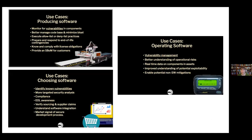These are some of the use cases: when you're producing the software, vulnerability monitoring is key for your dependencies and working on your code base, and only including what you really need. When you're operating software, again vulnerability management, but also real-time data on what's happening. When you're choosing software and bringing things in to create products, all of these are cases where we can use having a software bill of materials accessible, readable, and deployable.